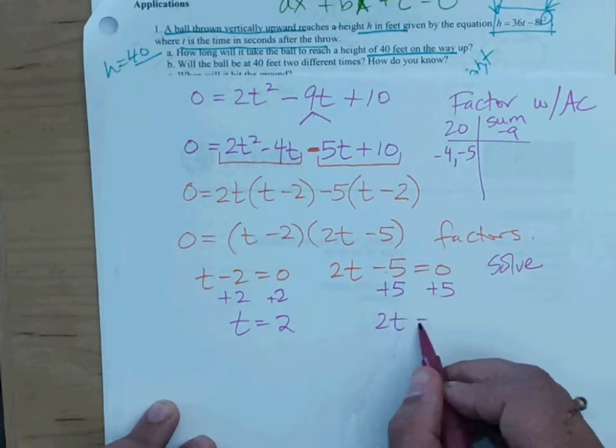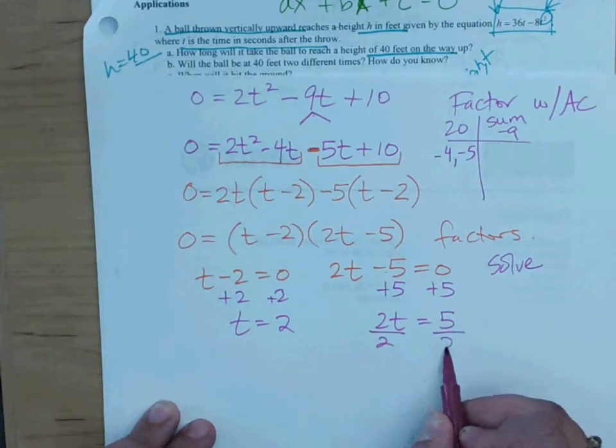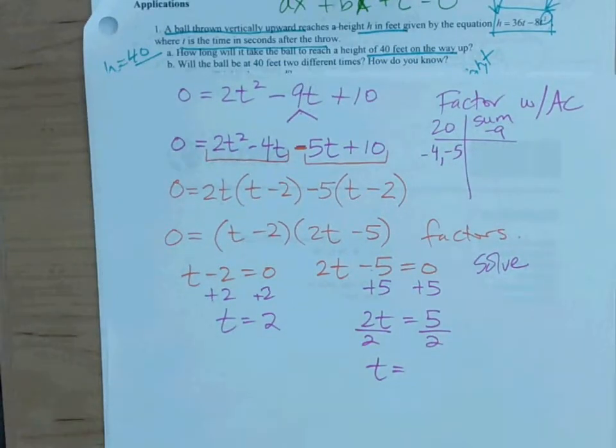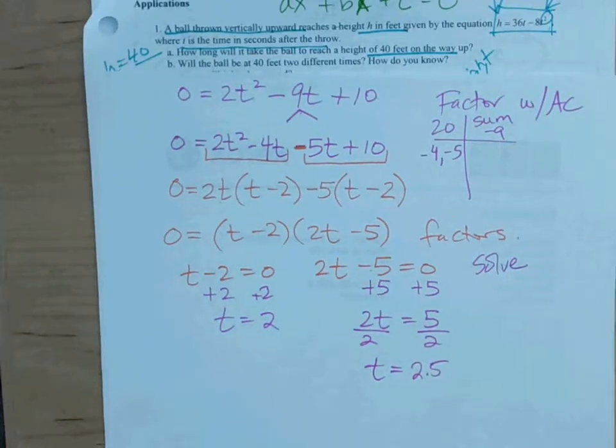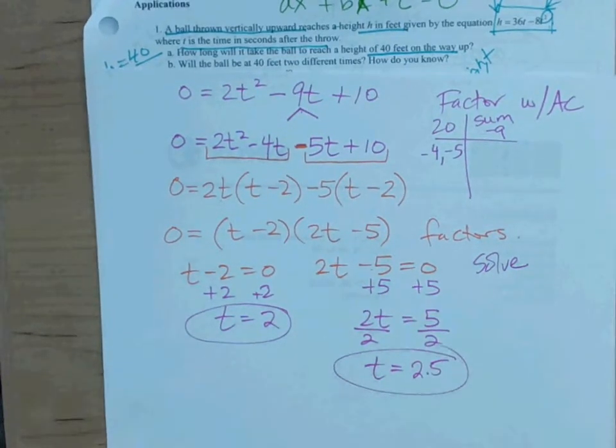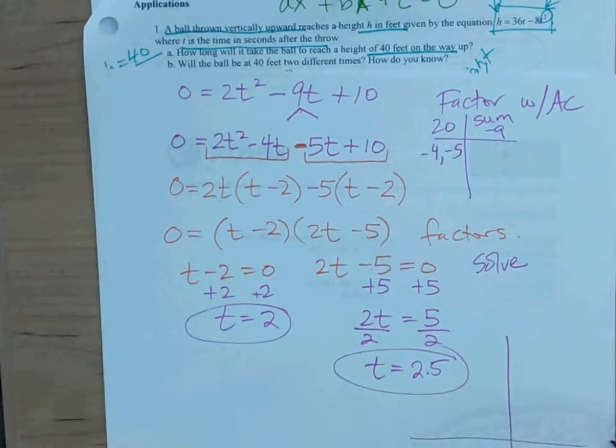What do I do to solve here? 2t minus 5 equals 0. 2t equals five. T, how do I get t by itself? Divide by 2. T equals, what's half of five? 2.5, or 5/2. Two point five, if you want.